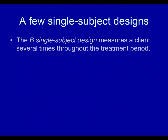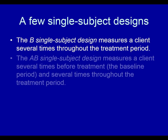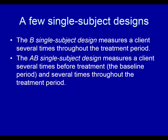Here are a few single subject designs. The B single subject design measures a client several times throughout the treatment period — you have no pre-treatment baseline; you start treating the client and begin measuring them repeatedly throughout the treatment period. The AB single subject design measures a client several times before treatment (the baseline period) and several times throughout the treatment period, and you compare the two to see if scores during treatment are significantly better than during baseline.